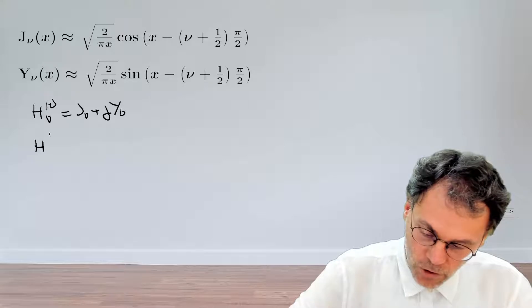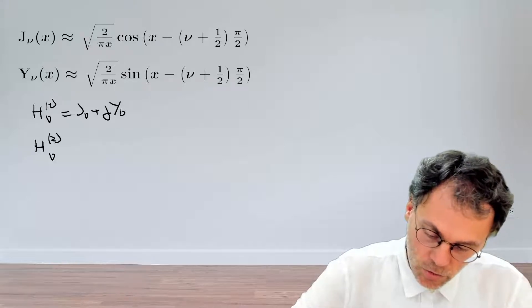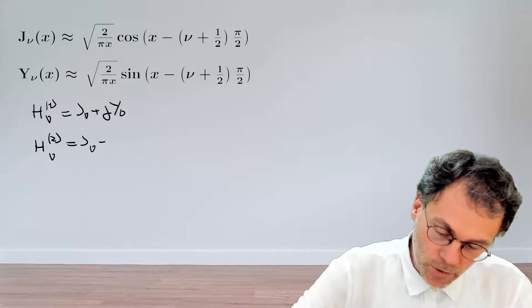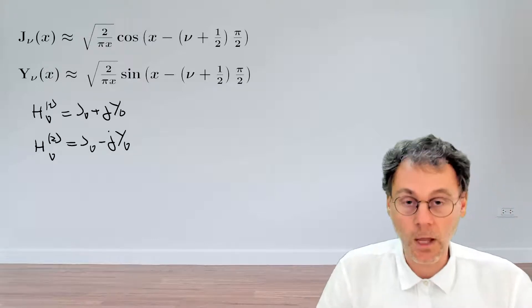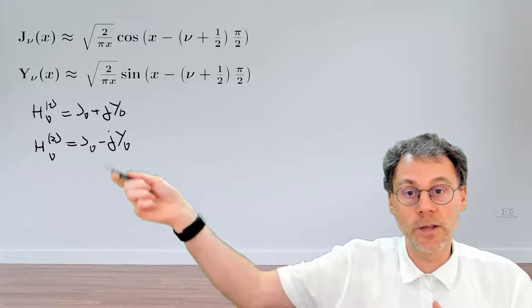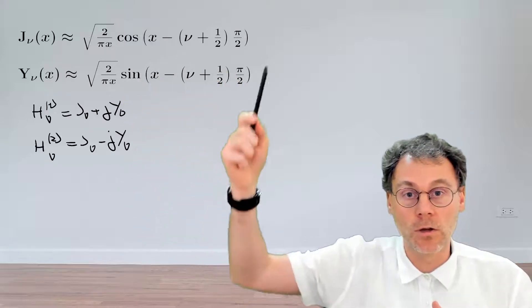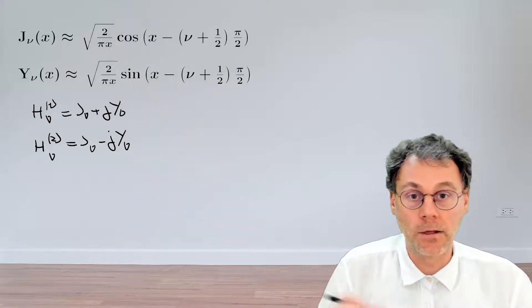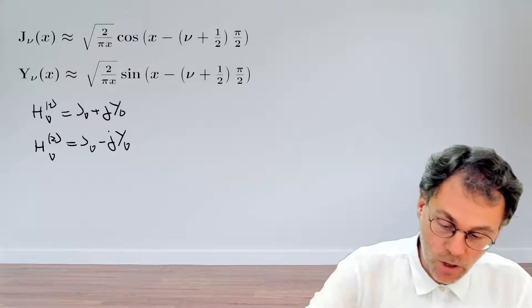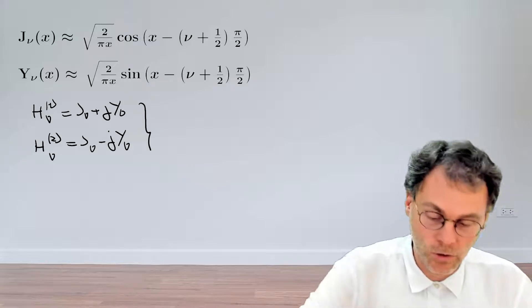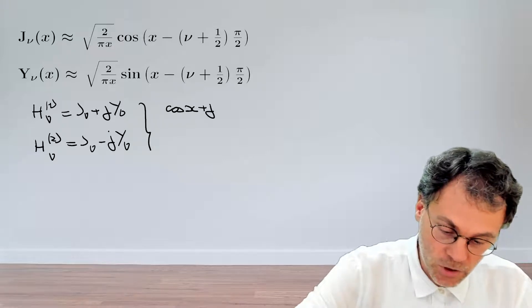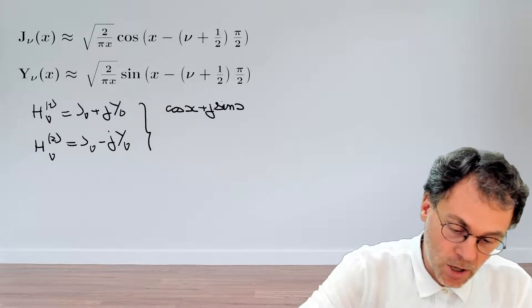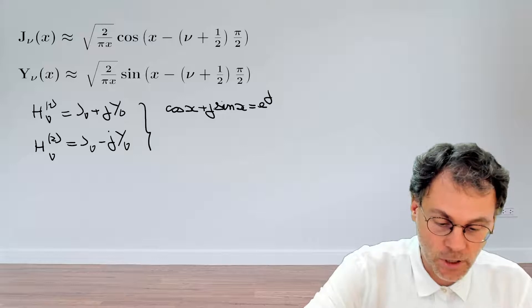And then the Henkel function of the second kind, order ν, is the same, but with a minus sign here in front of this j, this imaginary unit. And then we just need to take these particular linear combinations using those asymptotic forms. And then we just get what we need to show just by making use of Euler's identity. So we end up at the cosine of x plus j sine of x, which obviously is going to be exponential jx.